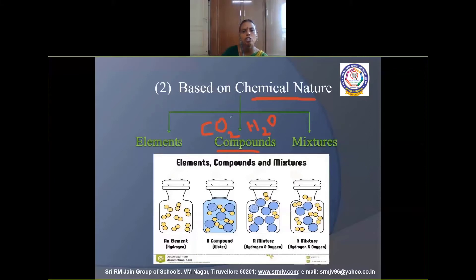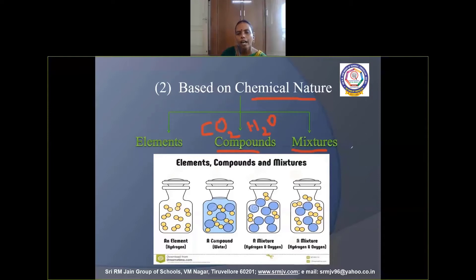Mixtures are formed when elements and compounds simply mix together. For example, iron and sulfur can be mixed together and can be separated easily using a magnet.